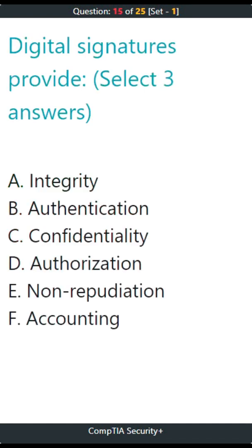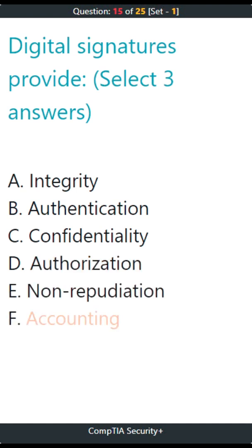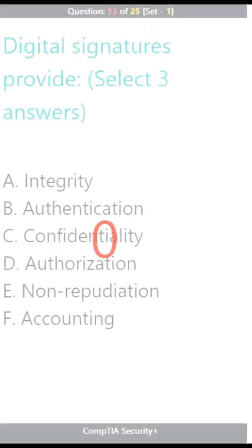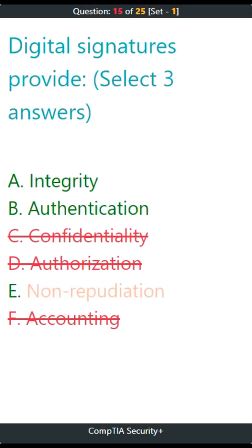Question 15. Digital signatures provide. Select three answers. A. Integrity, B. Authentication, C. Confidentiality, D. Authorization, E. Nonrepudiation, F. Accounting. The correct answers are A. Integrity, B. Authentication, E. Nonrepudiation.